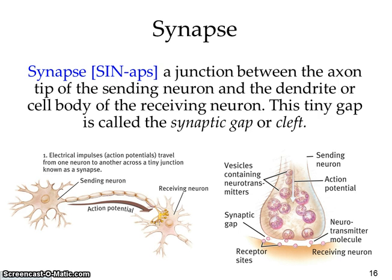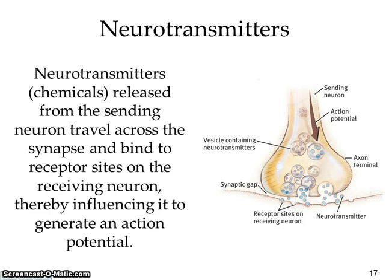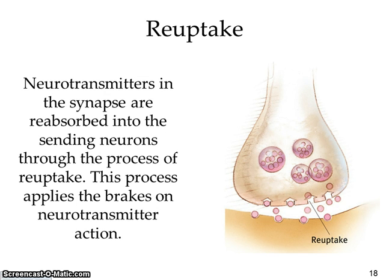A synapse is just the junction between the axon tip of the sending neuron and the dendrite or cell body of the receiving one — that's the synaptic gap or axon terminal. Neurotransmitters are chemicals released throughout our body that send messages and can change how we feel and behave. Neurotransmitters in the synapse are reabsorbed into the sending neuron through the process of reuptake, which acts like a brake on neurotransmitter action — like return to sender in the mail.